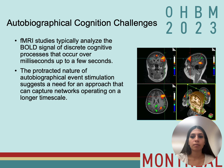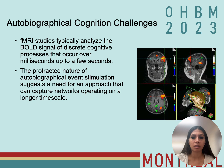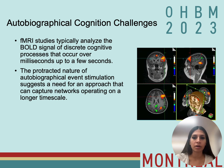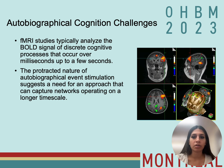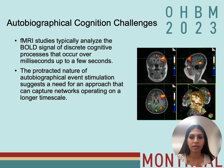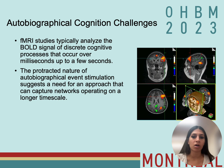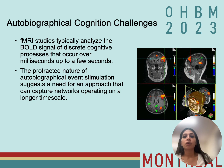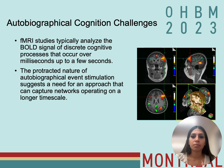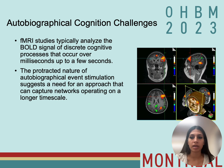Although patterns of BOLD signal changes induced during autobiographical event simulation overlap substantially with the default mode network, it has become increasingly clear that activation often extends beyond this network. The challenge with examining networks underlying autobiographical event simulation is that fMRI studies typically analyze the BOLD correlates of discrete cognitive processes that occur over milliseconds and up to a few seconds, and the protracted nature of autobiographical event simulation suggests a need for an approach that can capture networks operating on a longer time scale.